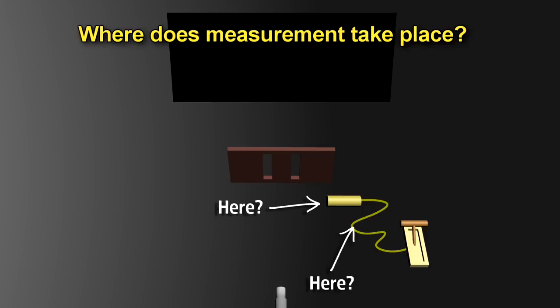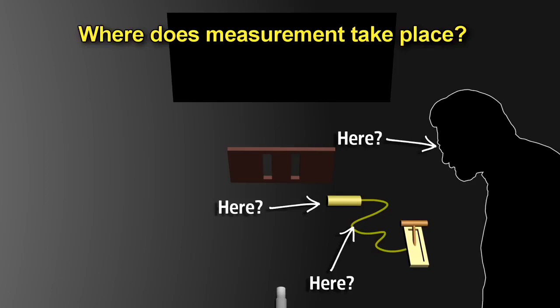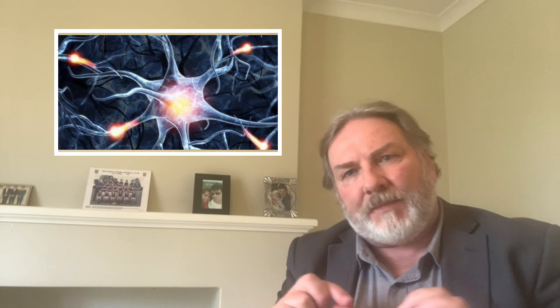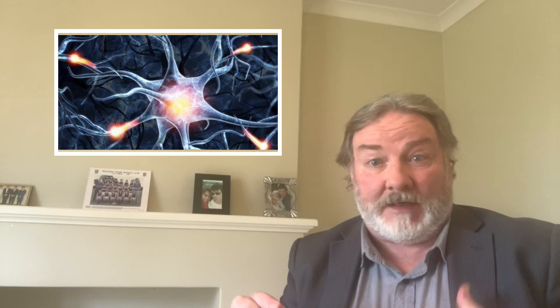Another question is: where does the measurement take place? Is it at the detector? Is it at the switch? Is it at the eyes of the observer? Or is it in the brain of the observer? Einstein said it was ridiculous to say the collapse occurred because of whether someone was watching or not. What if it's a baby watching it? The answer is: if it's a baby watching it, it doesn't collapse the wave function. If it's a dog, or any animal, it doesn't collapse the wave function. The wave function is only collapsed when a conscious human being collapses it.